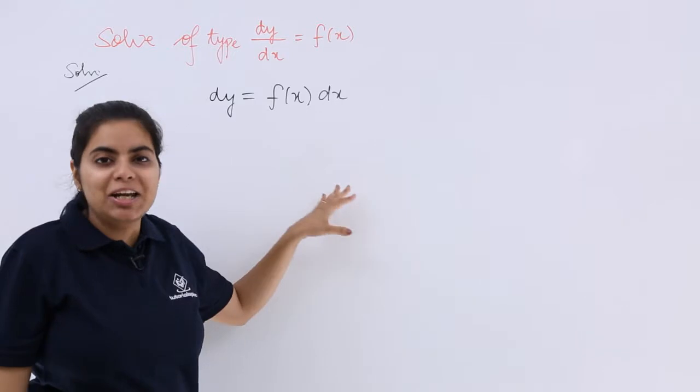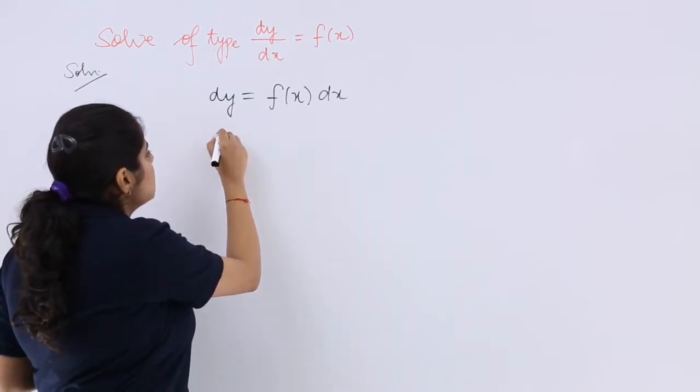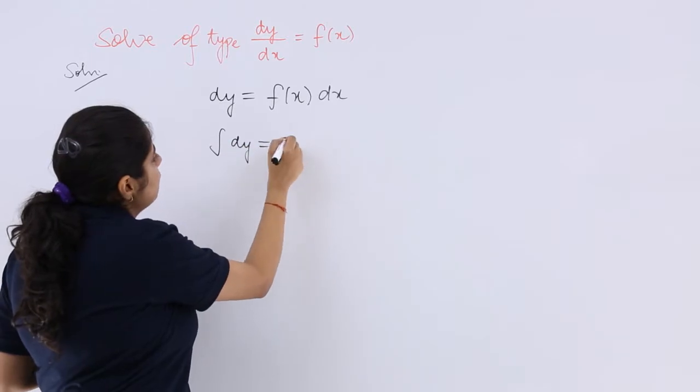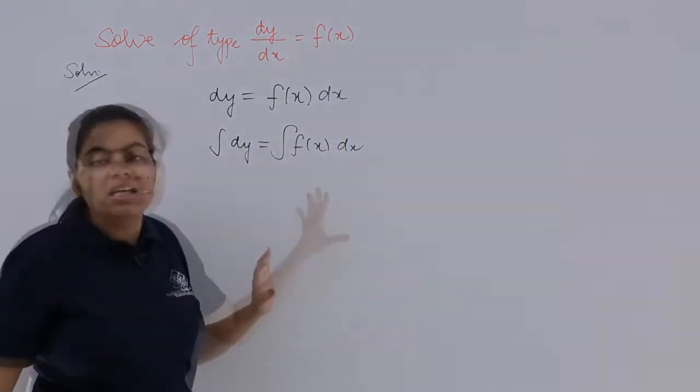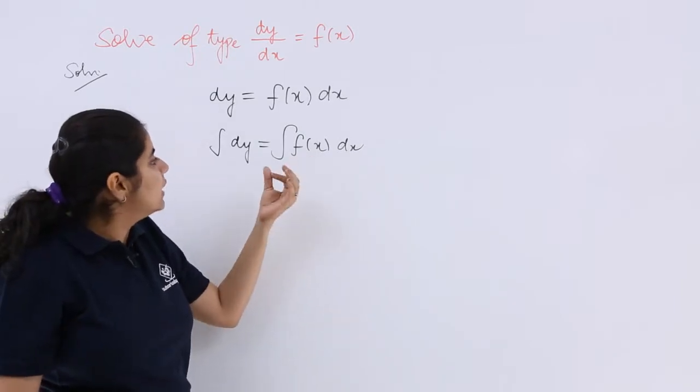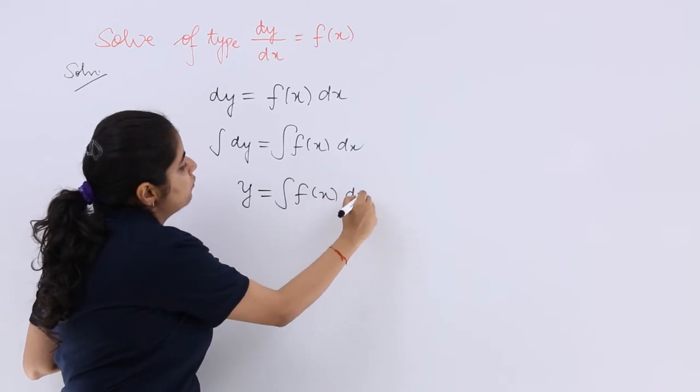Now if I have to integrate both sides that will be very beneficial. So I integrate both sides so it becomes integration of dy is equal to integration of f(x) dx. Now this has to be integrated, definitely its integration will give me y here.